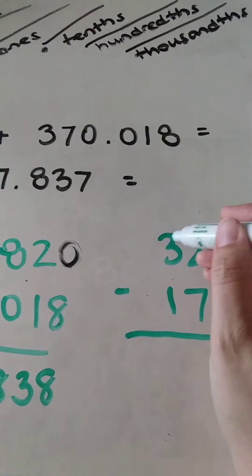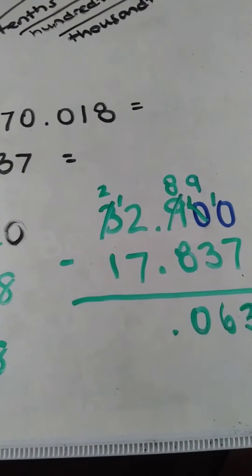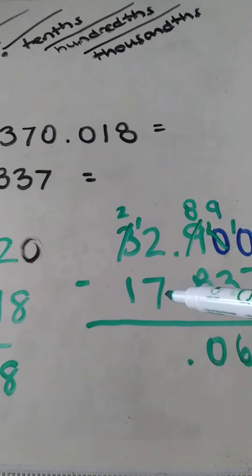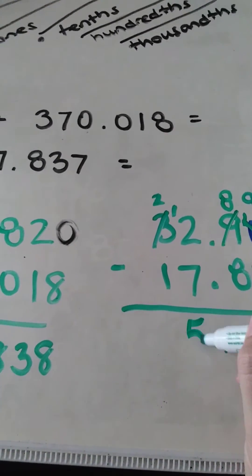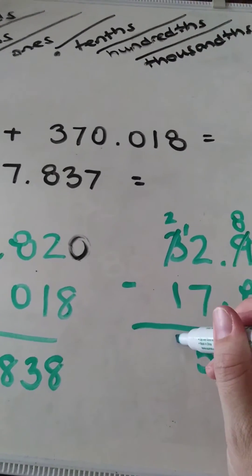Go borrow. Twelve minus seven is five, and then two minus one is one.